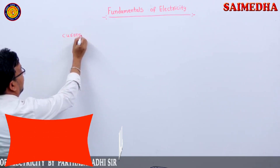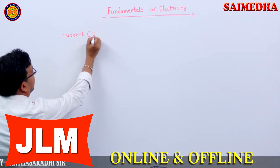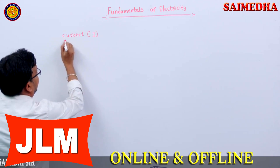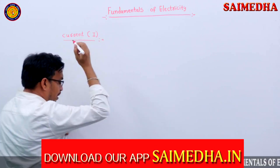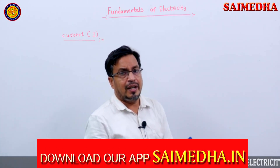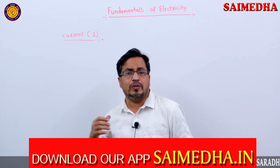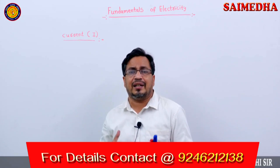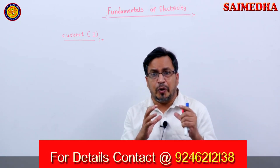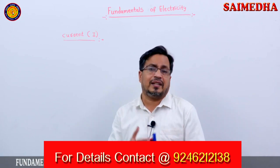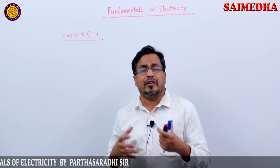What is the symbol of current? The symbol of current is I. We are discussing resistors, inductors, capacitors, functions, and circuit applications.